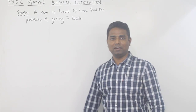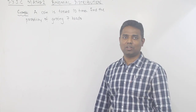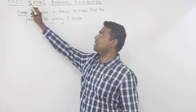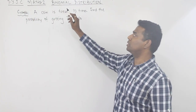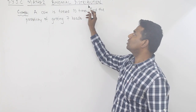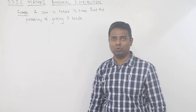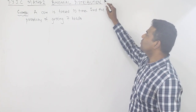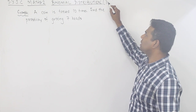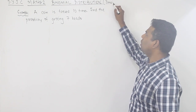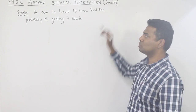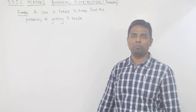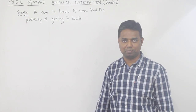We are today discussing a topic from SYJC Maths 2, Paper 2. The topic is called Binomial Distribution. From this topic they will ask you a question of minimum 3 marks. So minimum 3 marks question comes from the topic called Binomial Distribution.